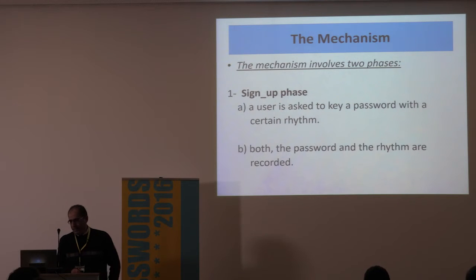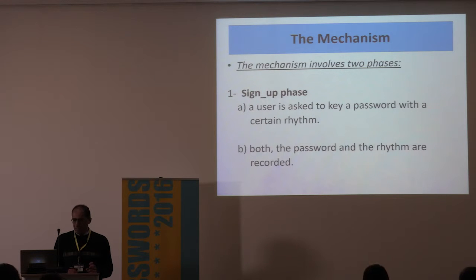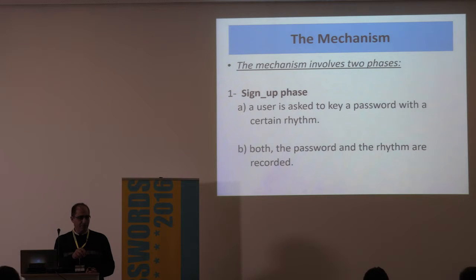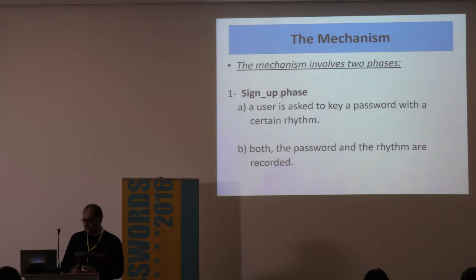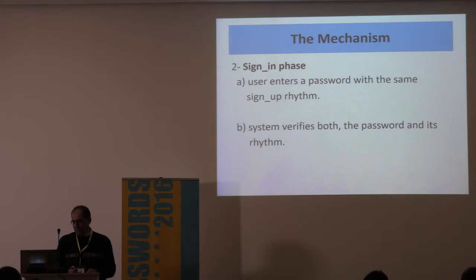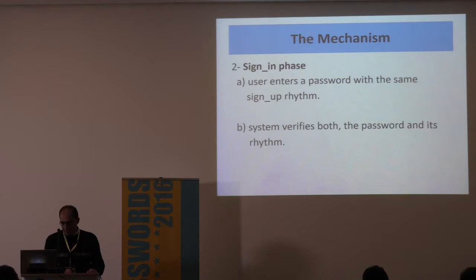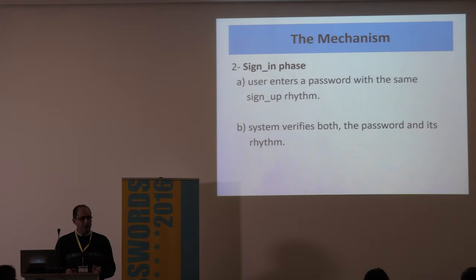The mechanism has two phases. In the sign-up phase, a user is asked to key a password with a certain rhythm two times. We compare the two entries; if the rhythms are similar, sign-up is successful. If the user cannot repeat the rhythm, they must try again. Once two similar rhythms are created, the user is registered, and we record both the password and rhythm. In the sign-in phase, the user enters the password with the rhythm, and the system verifies both. If there is a match, the user is granted access; otherwise, access is denied.